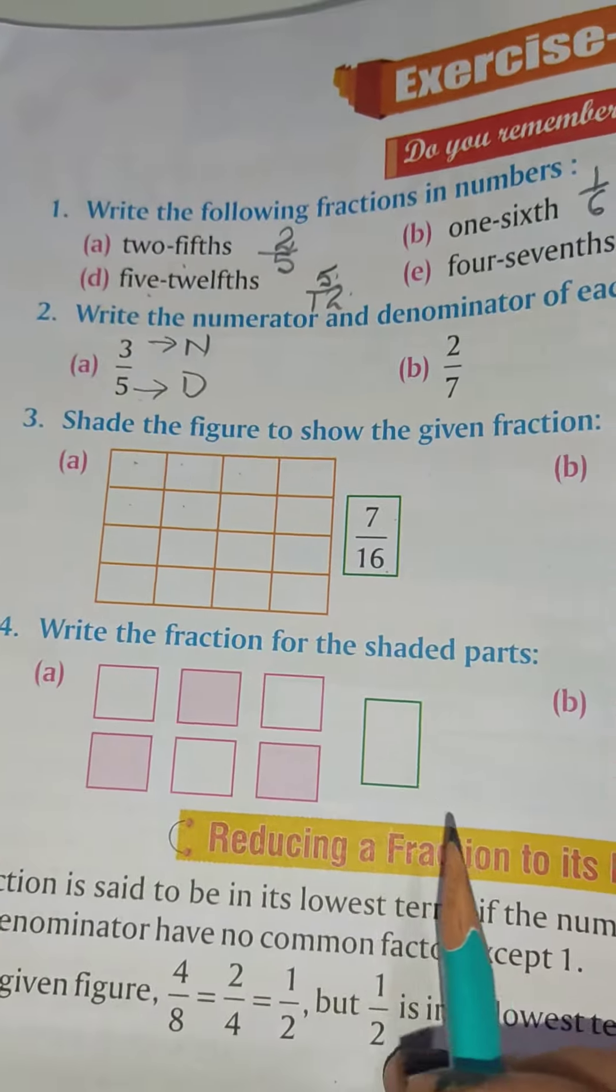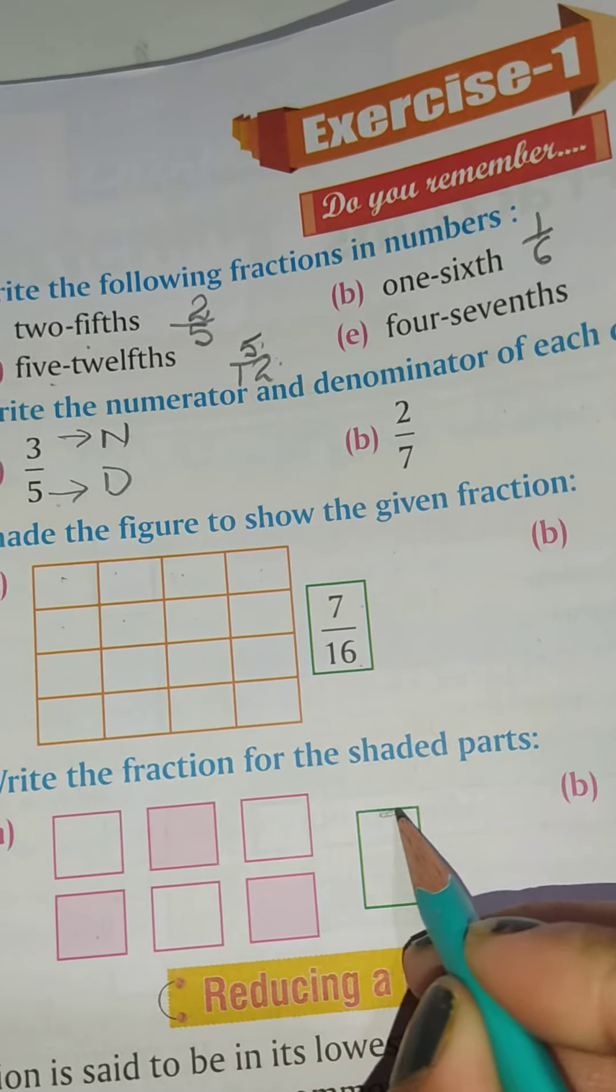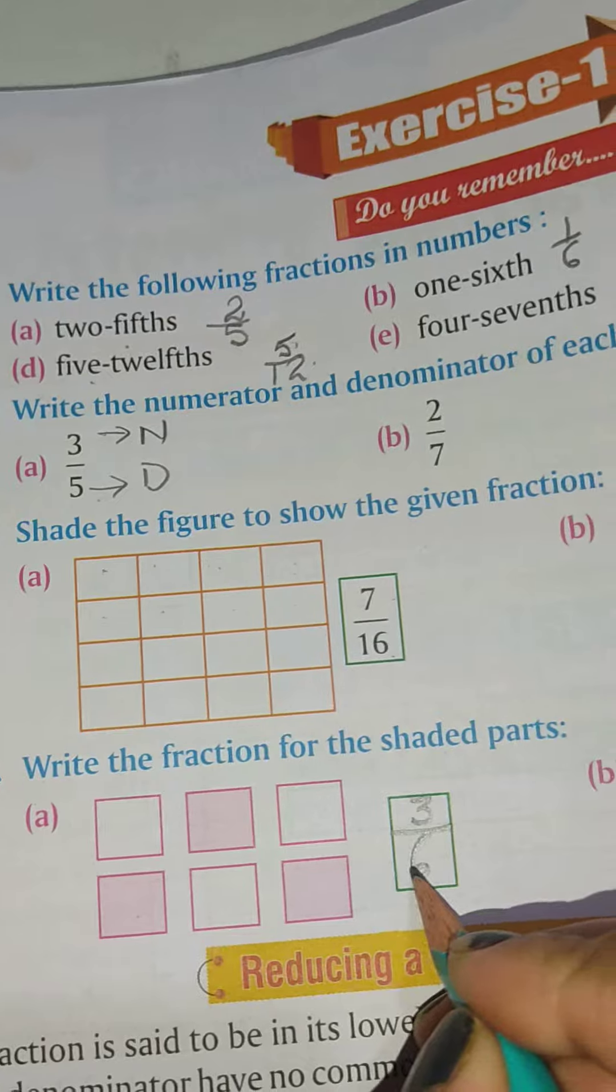Write the fraction for the shaded parts. The shaded parts are given. You have to write the fraction. How many parts are shaded? 1, 2, 3. So 3 will be your numerator. And total parts are 6. So 6 will be your denominator.